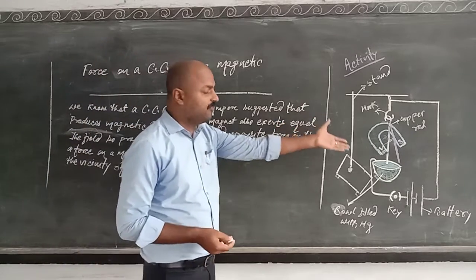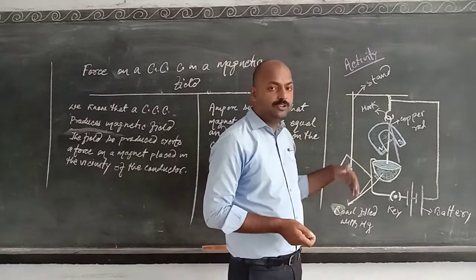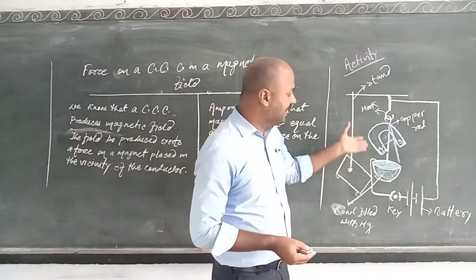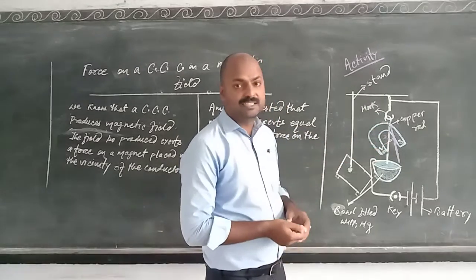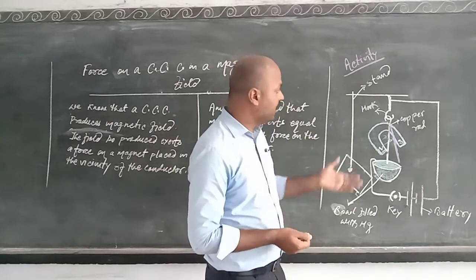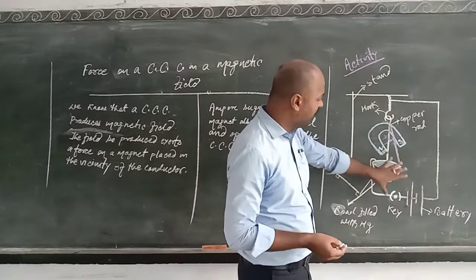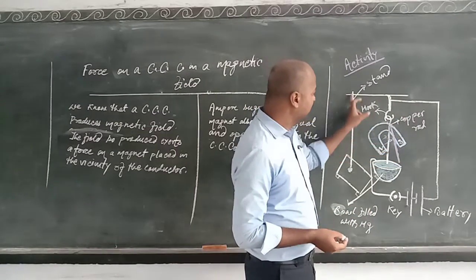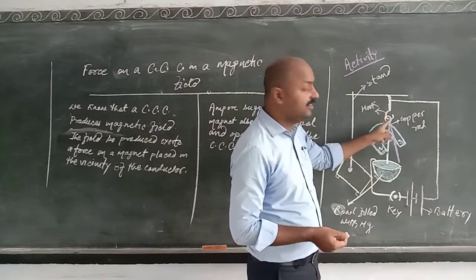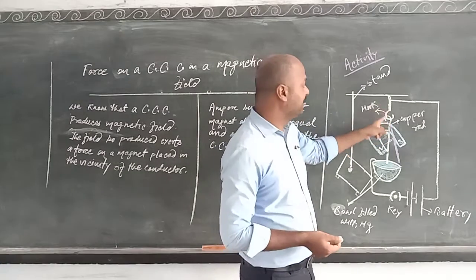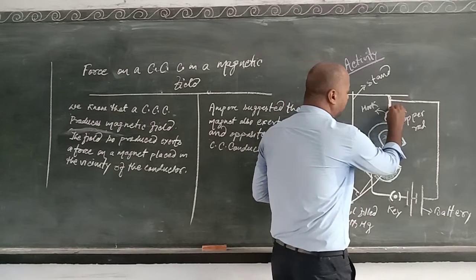With the help of an activity I am going to demonstrate how a current carrying conductor when placed in a magnetic field experiences force. Now try to understand this diagram. This is the diagram of a core circuit and this is a metallic stand by which I have a hook. This is a metallic hook and this metallic hook is connected with the wire.